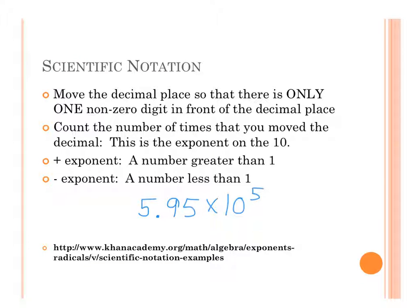Scientific notation is used in science to express numbers that are very large or very small. For example, the size of an atom, which is extremely small, or the distance from the Earth to the Sun, which is a very large number.